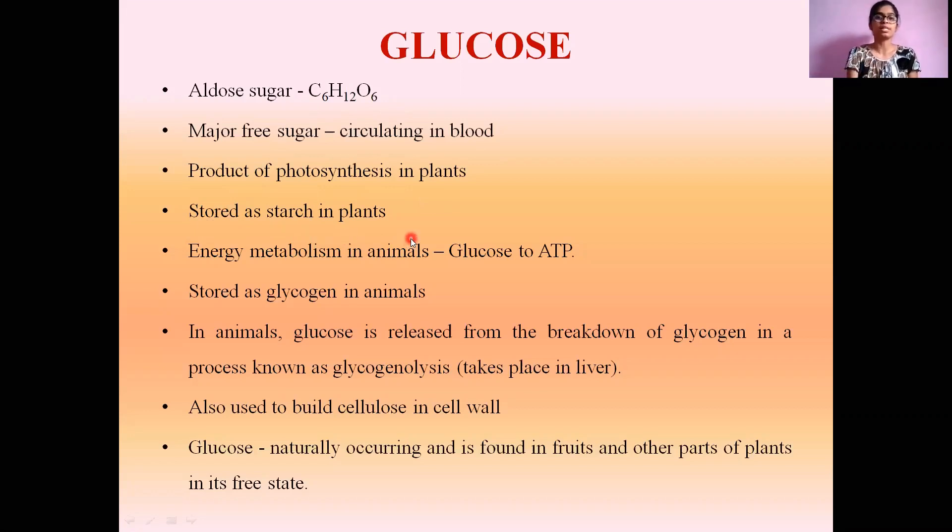Starch is a polysaccharide made up of a complex chain of glucose units linked together. In animals, energy metabolism converts glucose to ATP molecule, which is adenosine triphosphate, the major energy provider for animals. It is stored as glycogen in animals.